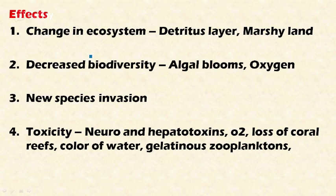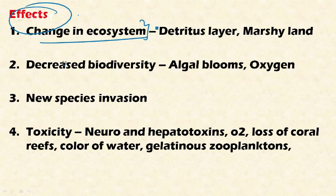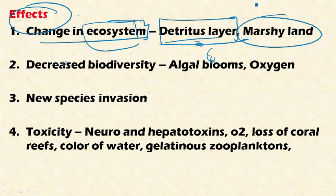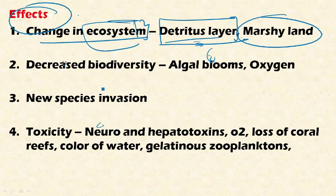The effects of eutrophication include changes in the ecosystem. The eutrophication phenomenon changes the entire aquatic ecosystem. It results in the formation of a detritus layer as saprophytes decompose the dead and decayed matter. It also converts the aquatic ecosystem into a marshy land, as dead harmful algal blooms sink to the bottom and create marshy conditions while increasing turbidity.